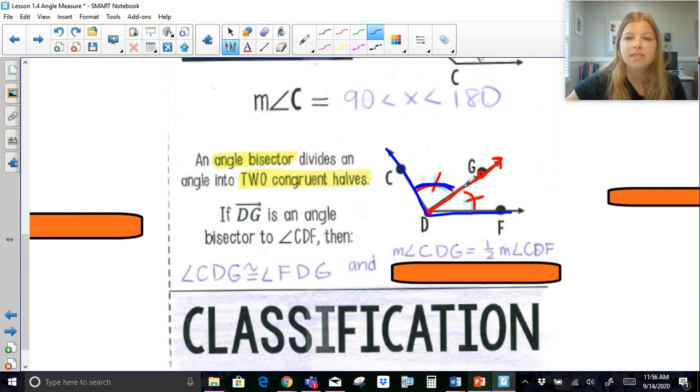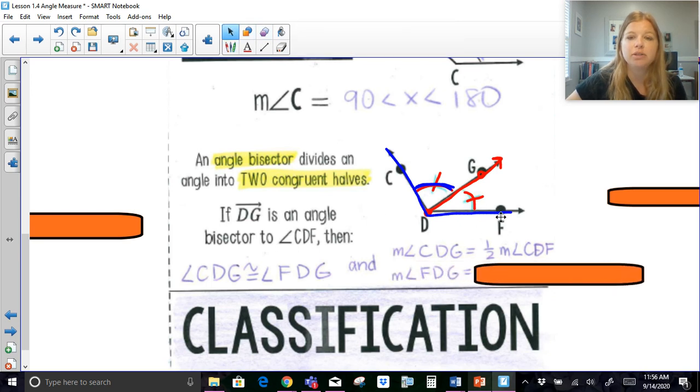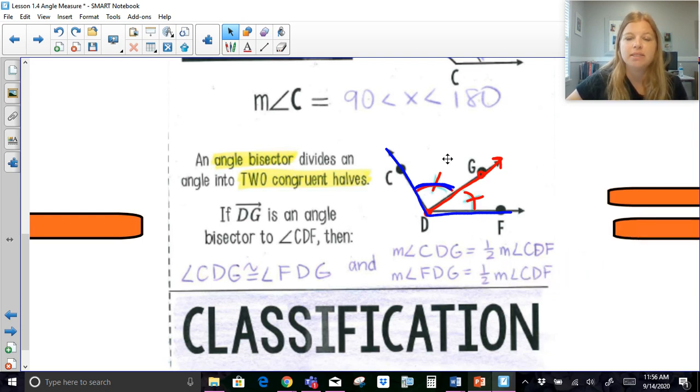The measure of CDG is equal to half of the measure of angle CDF, the entire value. I can also say that the measure of FDG, so the other angle that became one of the halves after being bisected, is equal to half of the entire amount. Something else I could say, instead of talking about half, I could say double. So I could say two times the measure of CDG is equal to the measure of angle CDF. Any of those would work.